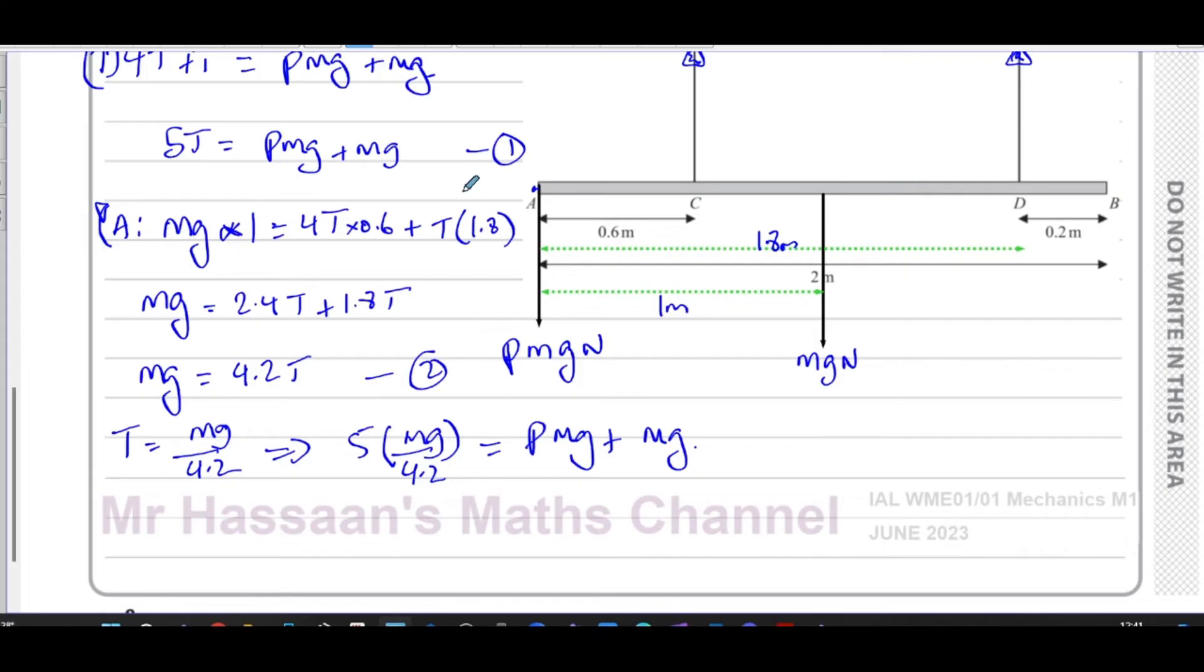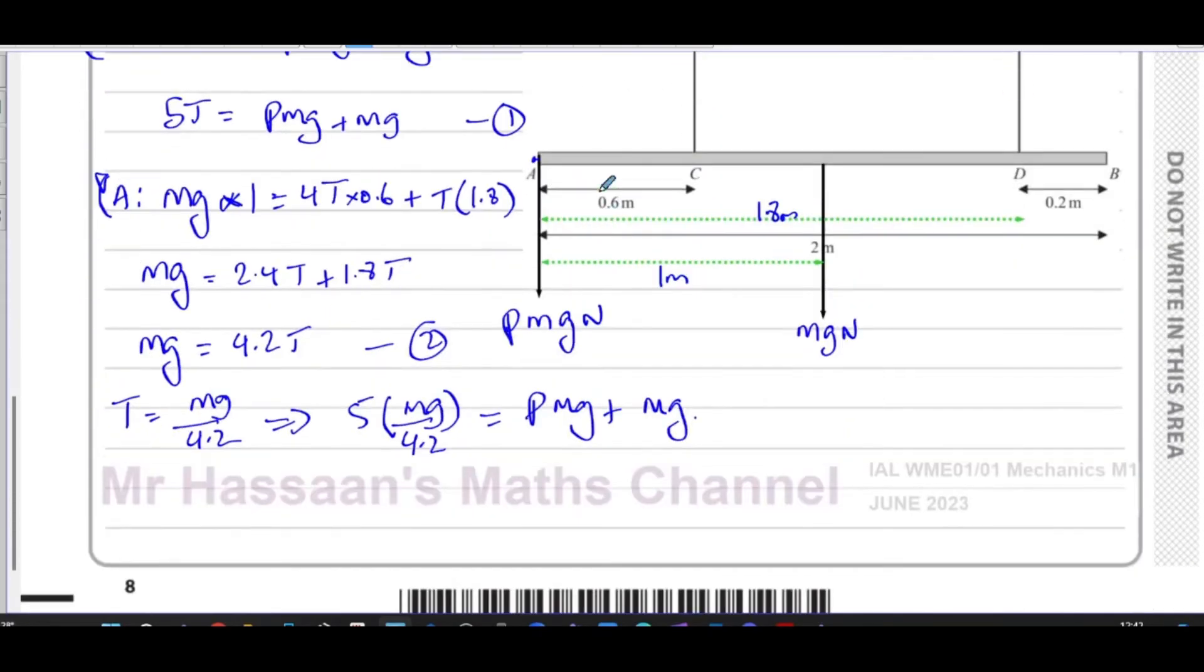It's asking us to find the exact value, so it's better to have these as fractions, 25 over 21. So 25 over 21 mg equals Pmg plus mg. So Pmg is equal to 25 over 21 mg minus 1 mg. The mg's can cancel out and you're left with 25 over 21 minus 1.